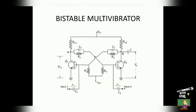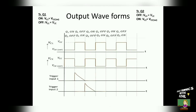The bistable multivibrator circuit is also called a flip-flop circuit because it functions like a flip-flop. A flip-flop is a memory element which stores one bit of binary information at a time. Likewise, the bistable multivibrator stores either plus VCC (logic 1) or VCE saturation (logic 0) at its output for an indefinite time period.